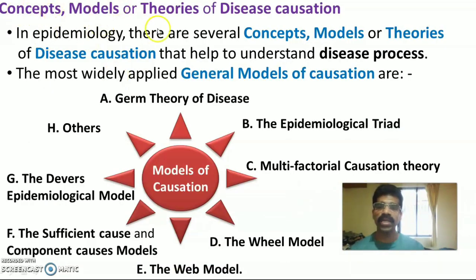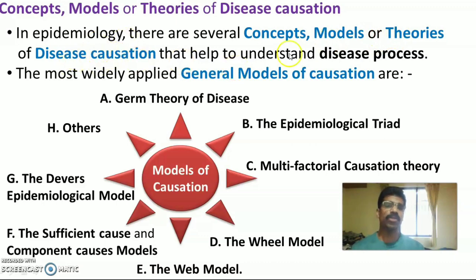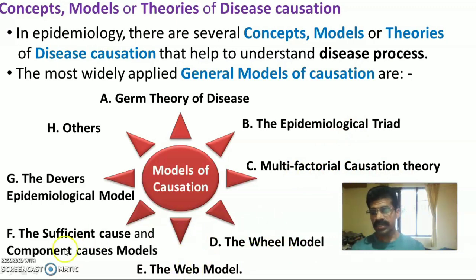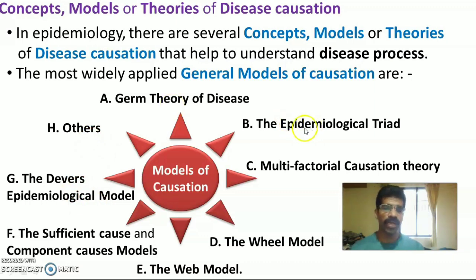There are many concepts, models, or theories of disease causation in epidemiology that help understand the disease process. The most widely used general models of causation are: germ theory of disease, epidemiological triad or triangle, multi-factorial causation theory, the wheel model, the web model, the sufficient cause and component cause models, the diverse epidemiological model, and others. In this video, we will focus on the epidemiological triad as a concept, model, and theory of disease causation.